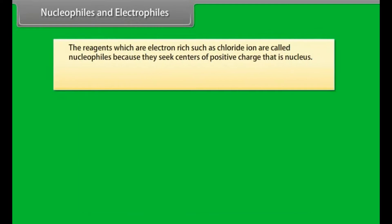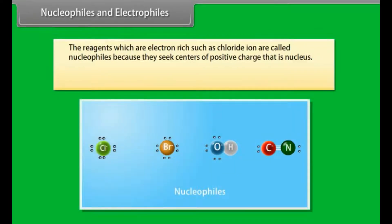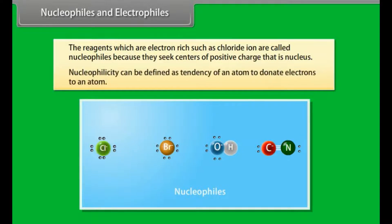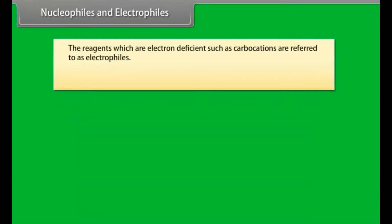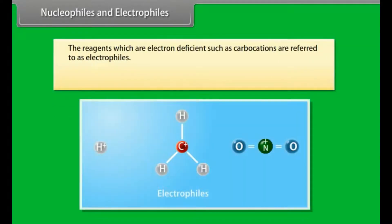Nucleophiles and Electrophiles. The reagents which are electron rich, such as chloride ion, are called nucleophiles because they seek centers of positive charge, that is, the nucleus. Nucleophilicity can be defined as the tendency of an atom to donate electrons to another atom.